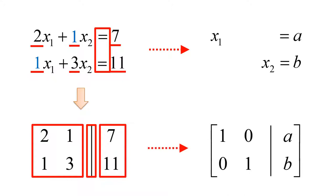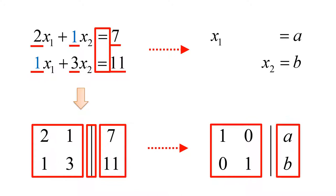Next, we reduce the augmented matrix to a reduced row echelon form using Gauss-Jordan elimination. The reduced row echelon form is an identity matrix on the left side and certain numbers on the right side. Here we use a and b as an example. The reduced row echelon form is equivalent to the simple equations above, so your solutions are x1 equals a and x2 equals b.